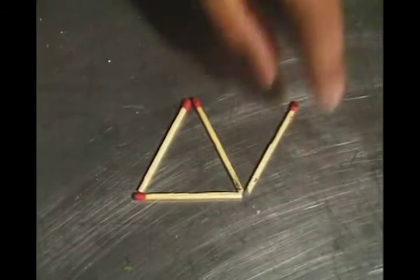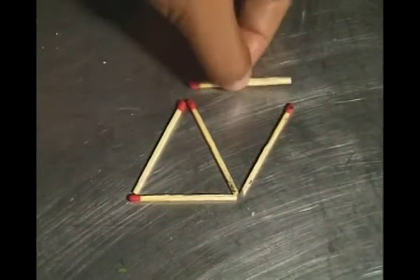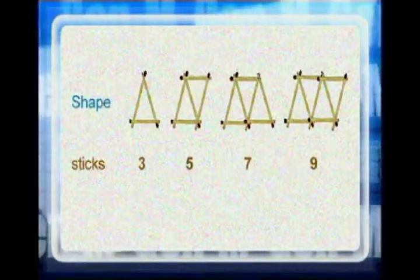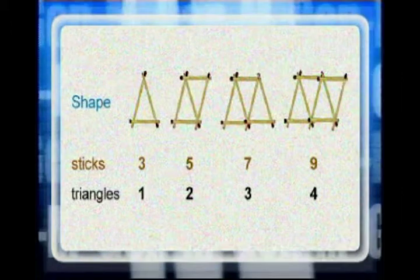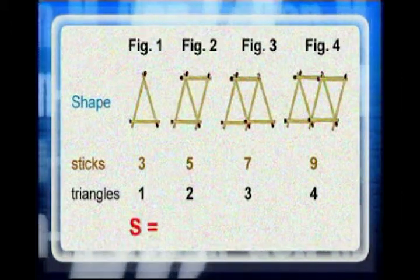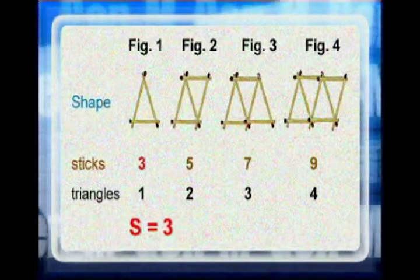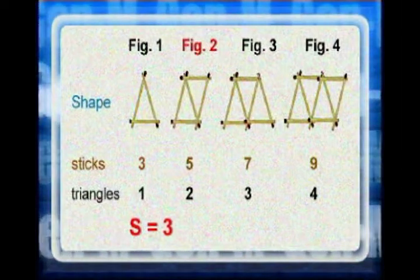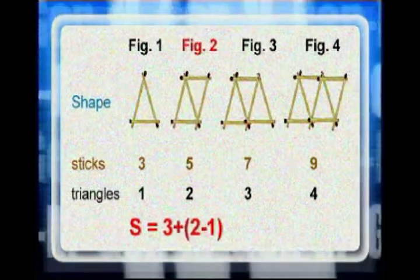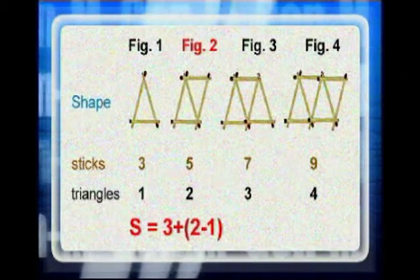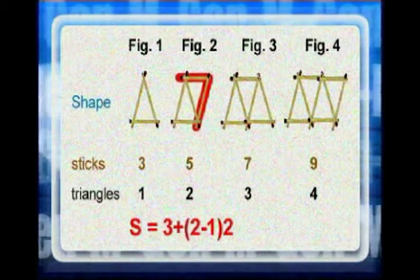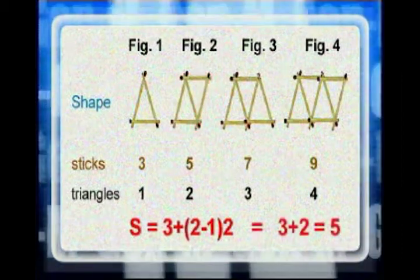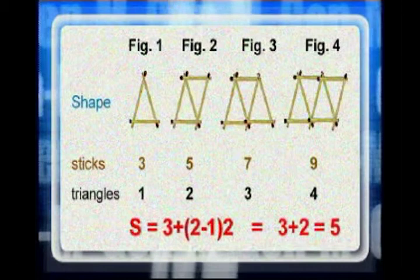Here, for every additional triangle, we only need to add two sticks after the first three sticks. We can say that the number of sticks, let's call the number S, is equal to three previous sticks plus the quantity of second sequence minus one times the common difference of two. We then get three plus two equal five.